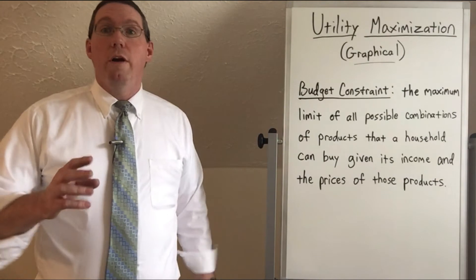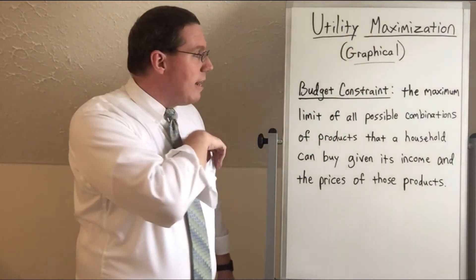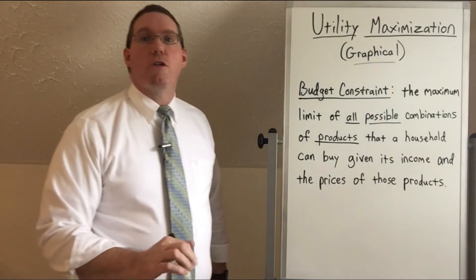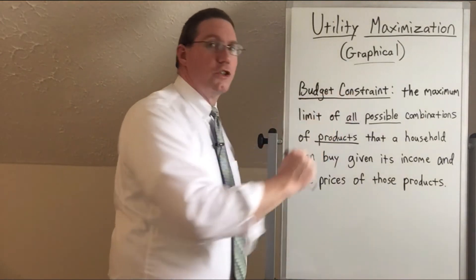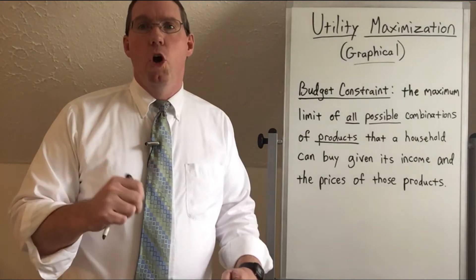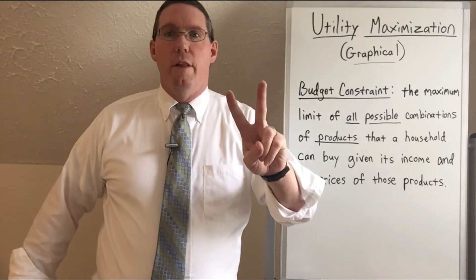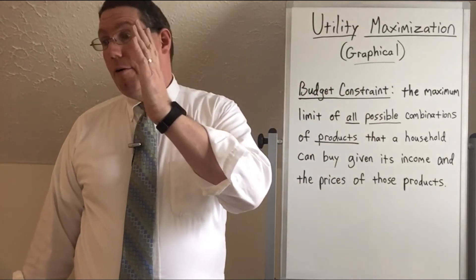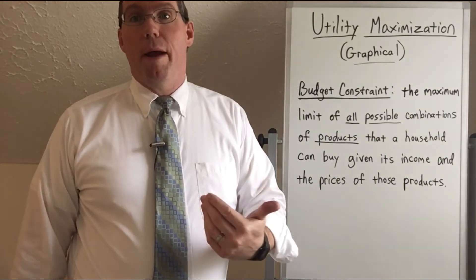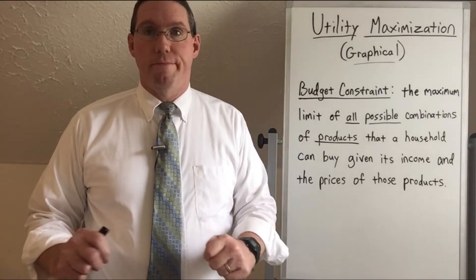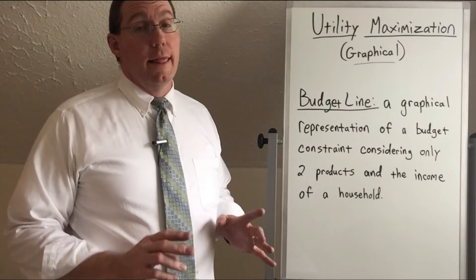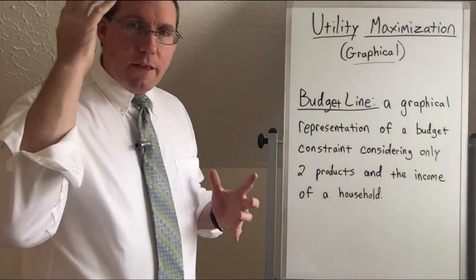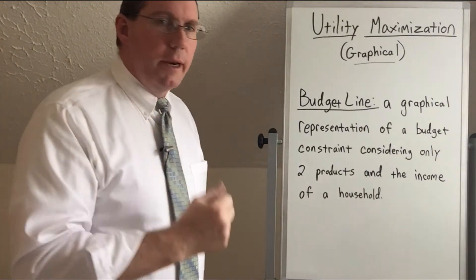What we're about to do is understand the idea of utility maximization by, instead of graphing all possible products, focusing on just two possible products. We're going to understand a budget constraint based on a comparison of only two things — taking everything off the list so there are only two items. For example, we could compare bread and milk, or shoes and mashed potatoes, but what we're going to compare is pants and shirts.